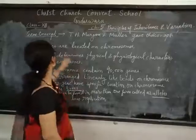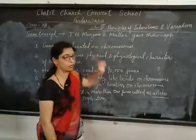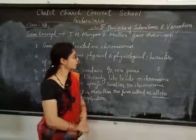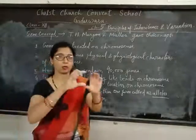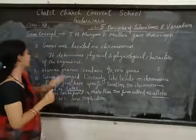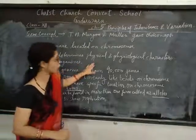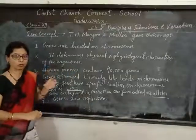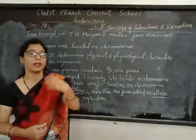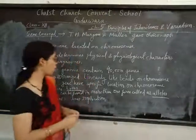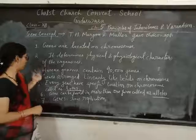Now, the gene concept. Gene concept was given by T.S. Morgan and Miller. They said that genes are located on chromosomes, and it determines the physical and physiological characters of the organism. Physical characters are external, and physiological characters means their internal activity of the body - all of that is determined with the help of genes, they are controlled by genes.